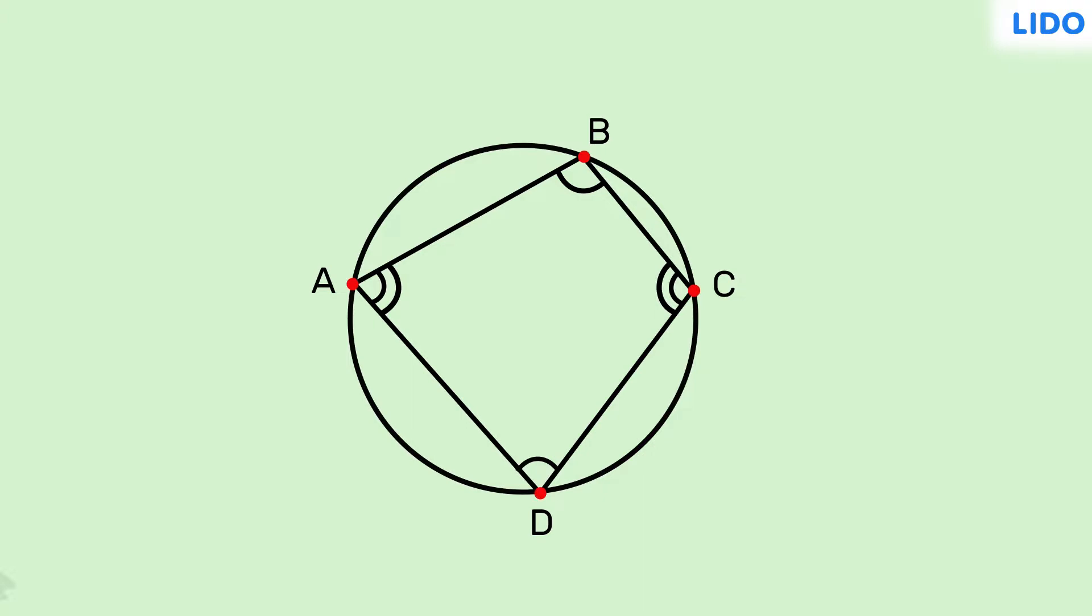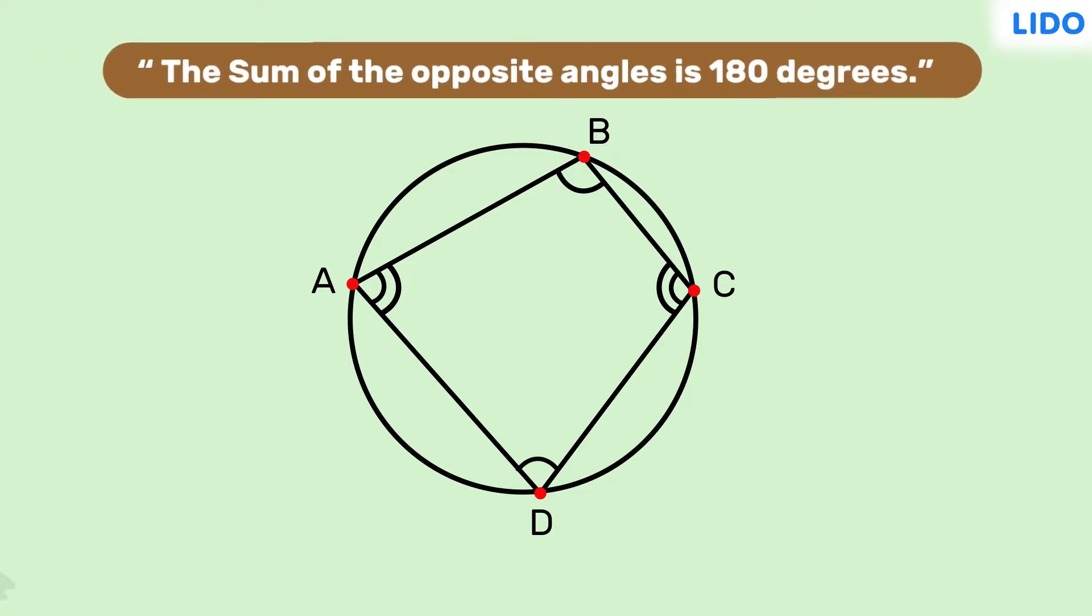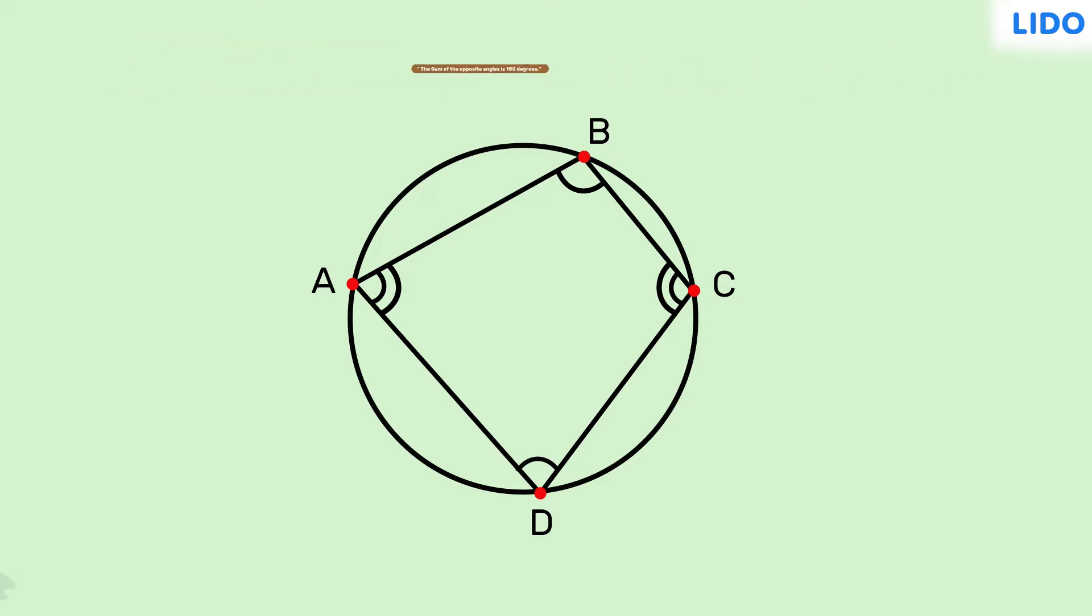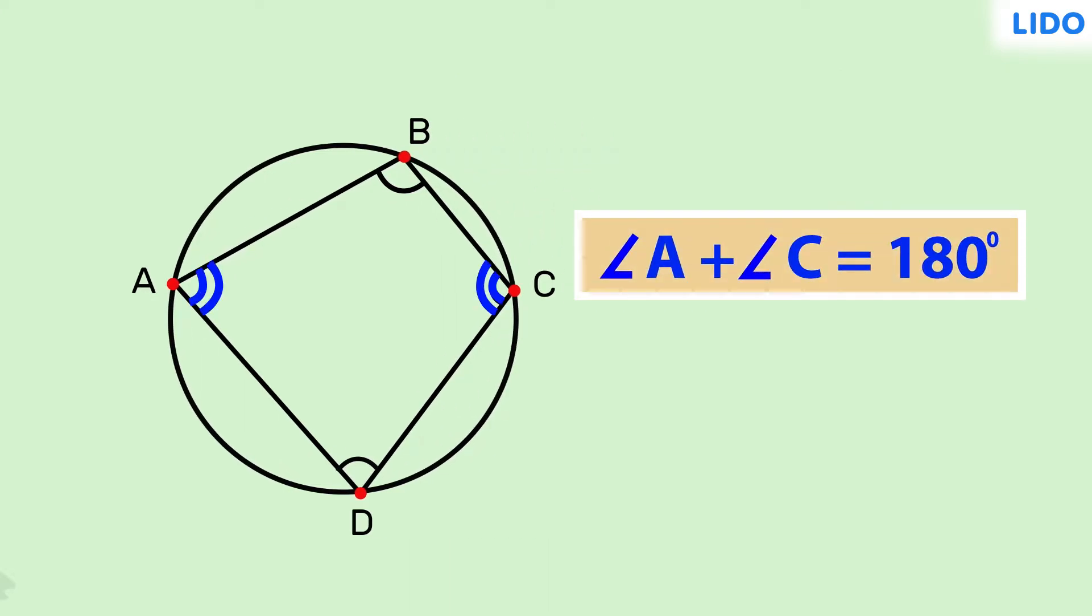Not every quadrilateral is cyclic. Wondering what makes it unique? Well, in any cyclic quadrilateral, the sum of the opposite angles is 180 degrees. In other words, the sum of angle A and angle C equals 180 degrees, and the sum of angles B and D equals 180 degrees.